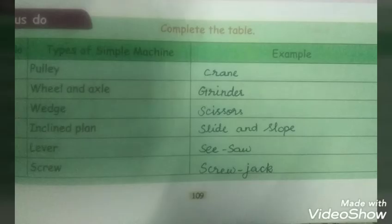Complete the table. Types of simple machine with example. Pulley, crane. Wheel and axle, grinder. Wedge, scissors. Inclined plane, slide and slope. Lever, seesaw. Screw, screw jack.